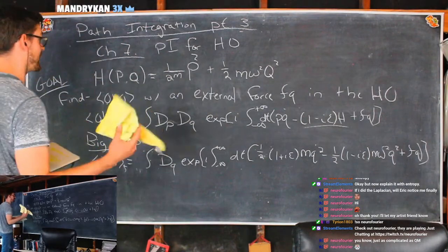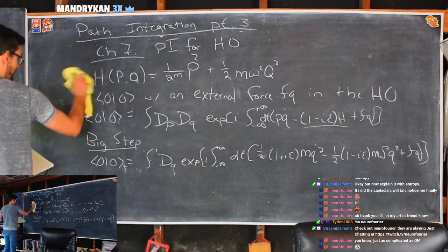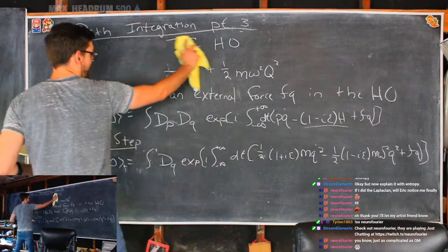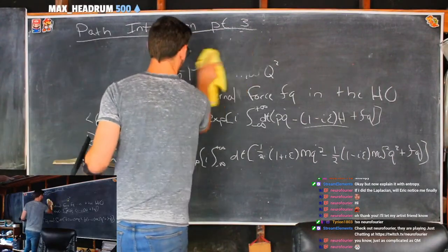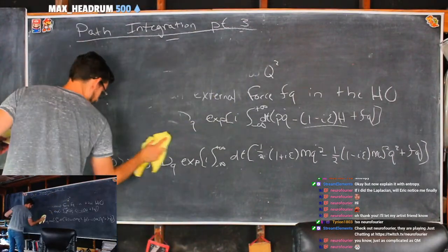Now let's do a Fourier transform. We're going to erase this so we can write down what the Fourier transform is at the top, and when we do it, it will make more sense.